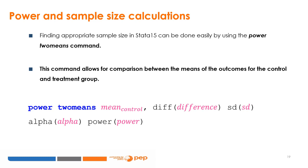Finding an appropriate sample size in Stata 15 can be done easily using the PowerToMeans command. This command allows comparison between the means of the outcomes for the control and treatment groups — deciding whether the difference between them is 0 (no effect) or different from 0 (there is an effect). This is a two-sided means test. In order to proceed, we need to input the mean of the control group, the expected difference between the means, the standard deviation of the outcome, and the desired levels of statistical significance and power.